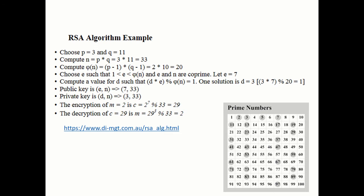Here is another example. Let's solve it together to see how we calculate D. P = 3 and Q = 11. n = 11 × 3 = 33, and phi(n) = (3−1) × (11−1) = 2 × 10 = 20.